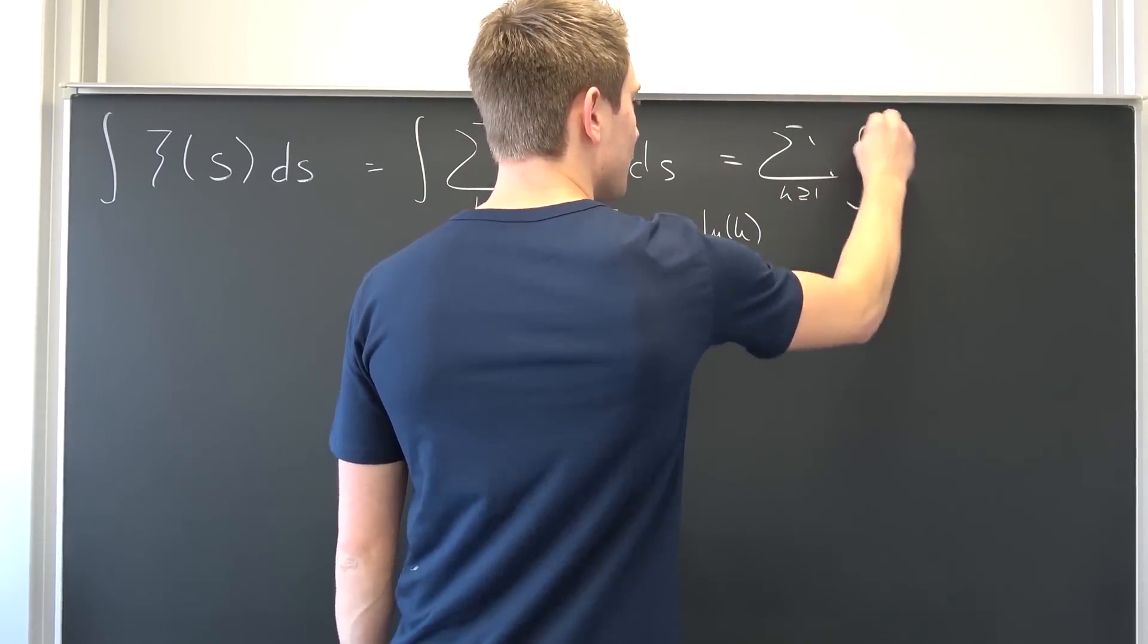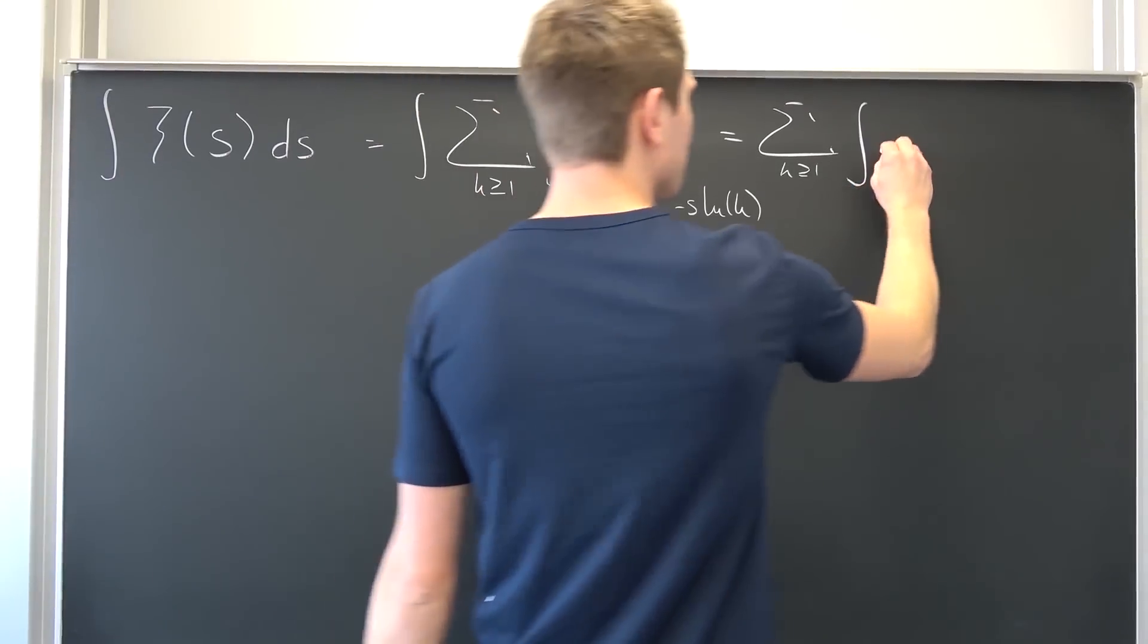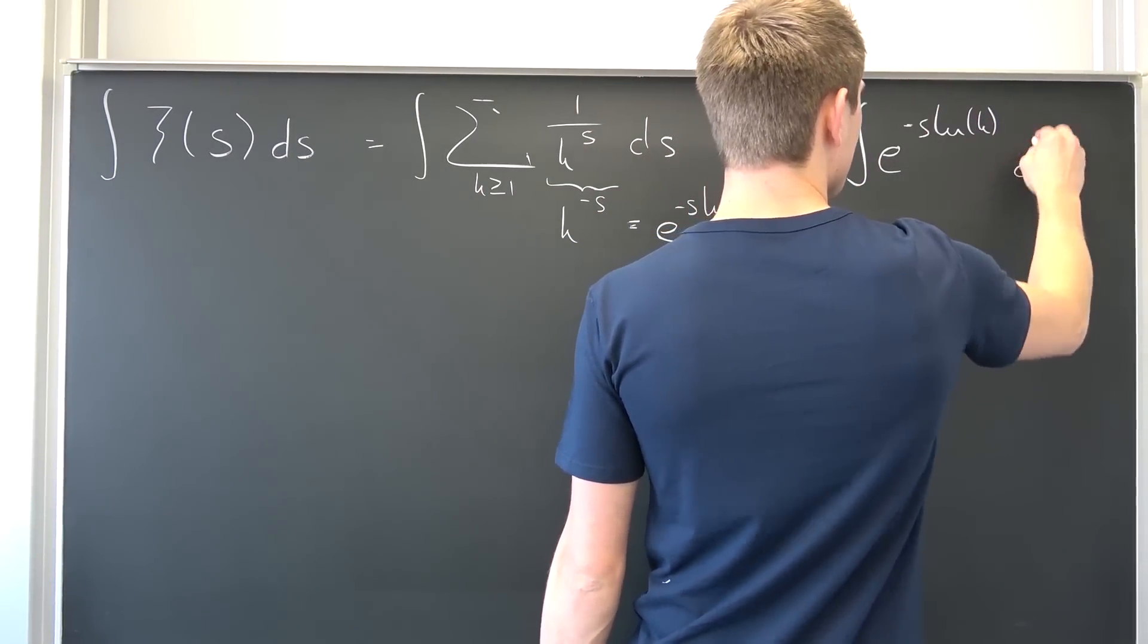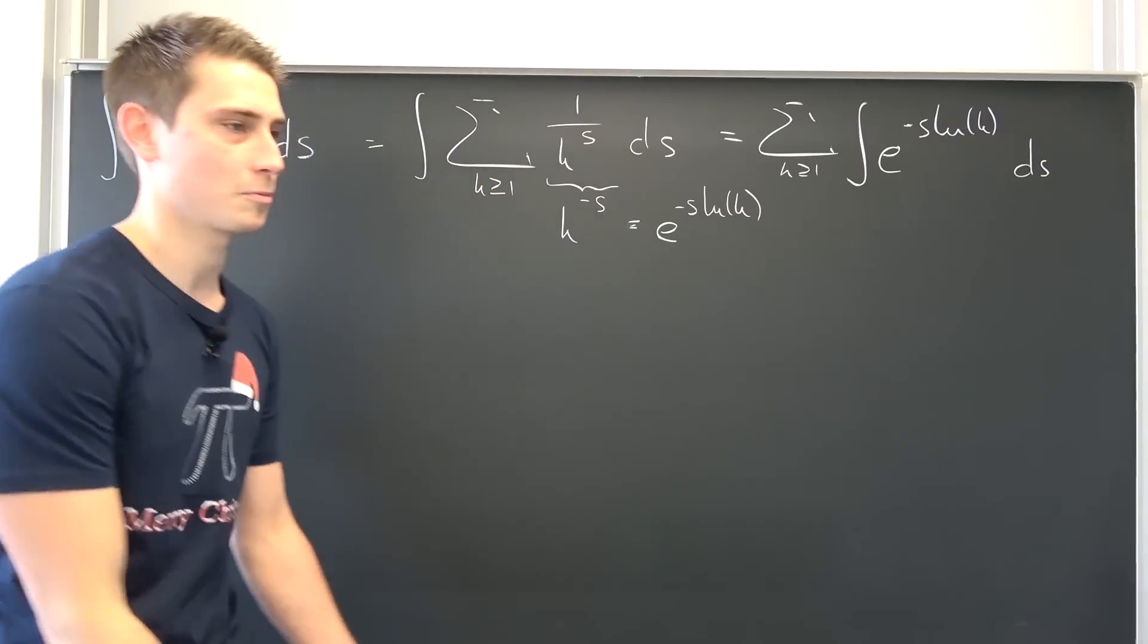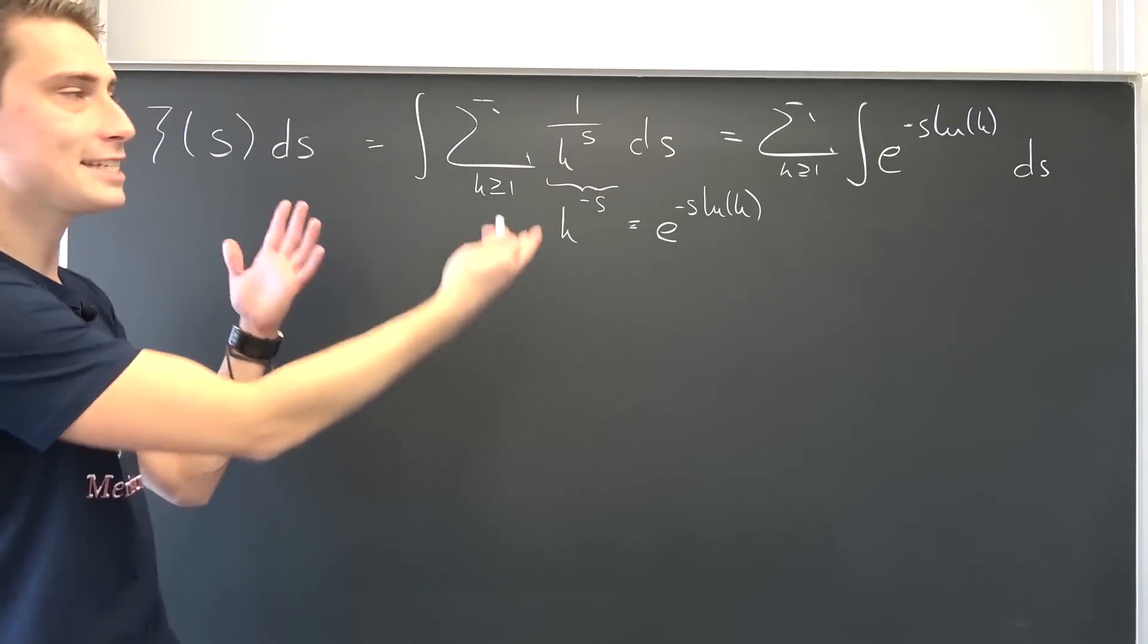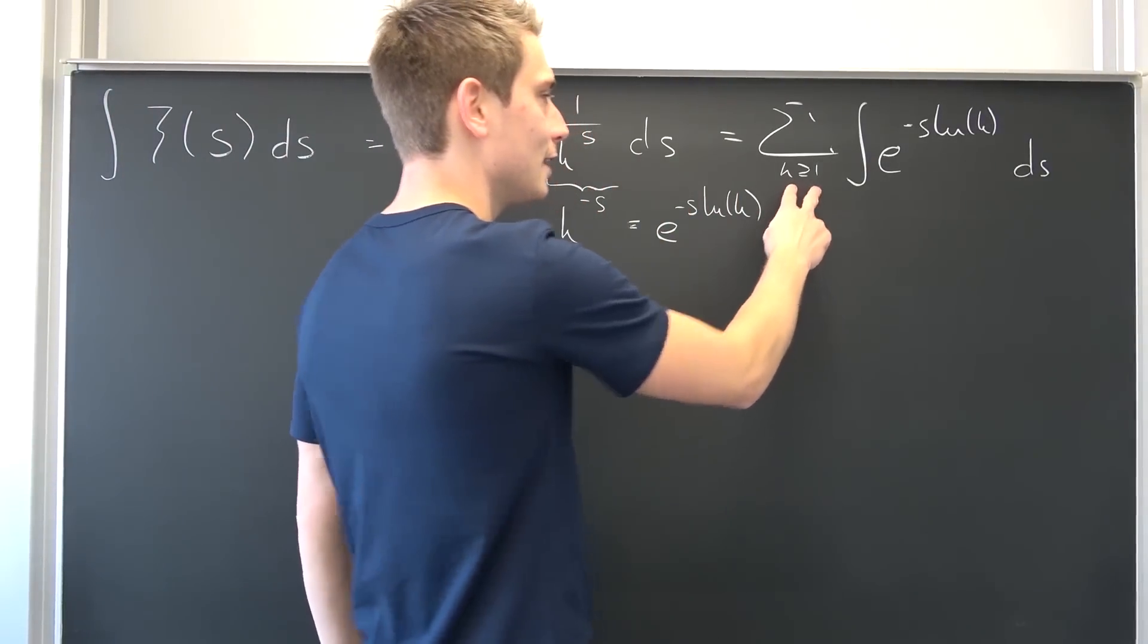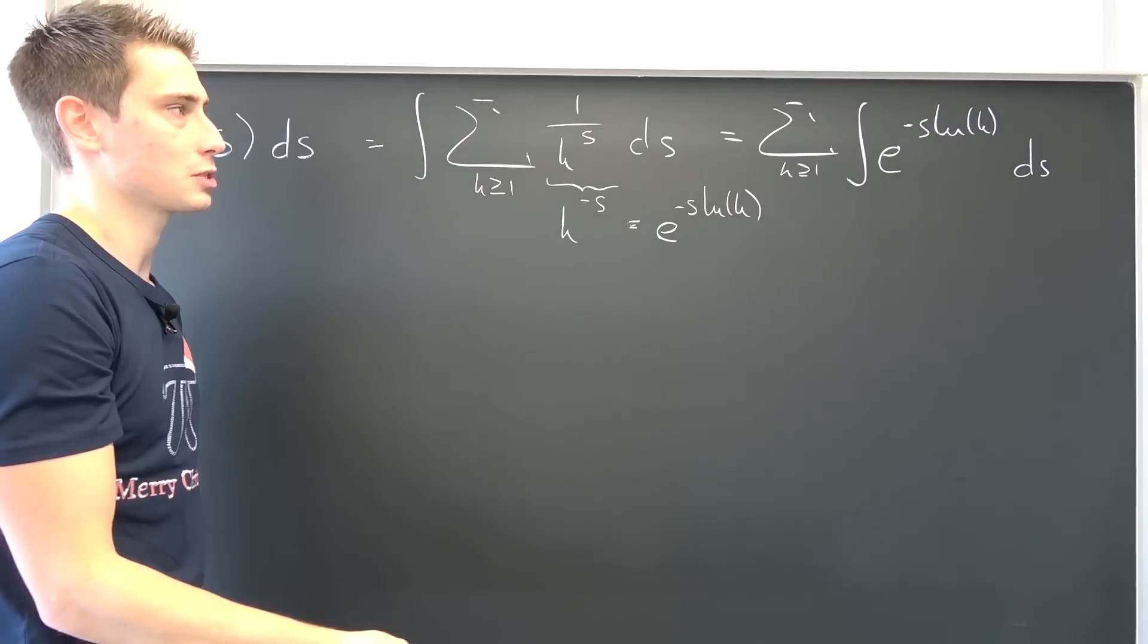Now, k being greater or equal to 1, integral of e to negative s natural log of k, integrated with respect to s. And, well, it's an easy thing. It's really nothing hard. The only hard thing is to really justify why you can interchange those limits.